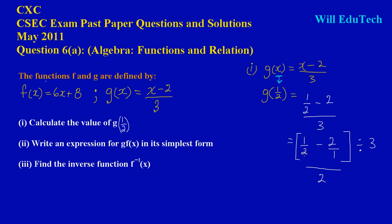The LCD is 2. 2 into 2 goes 1 time, 1 times 1 gives me 1, minus 1 into 2 goes 2 times, 2 times 2 gives me 4. What I have left is 1 minus 4, so this implies I'm going to get -3/2 divided by 3.